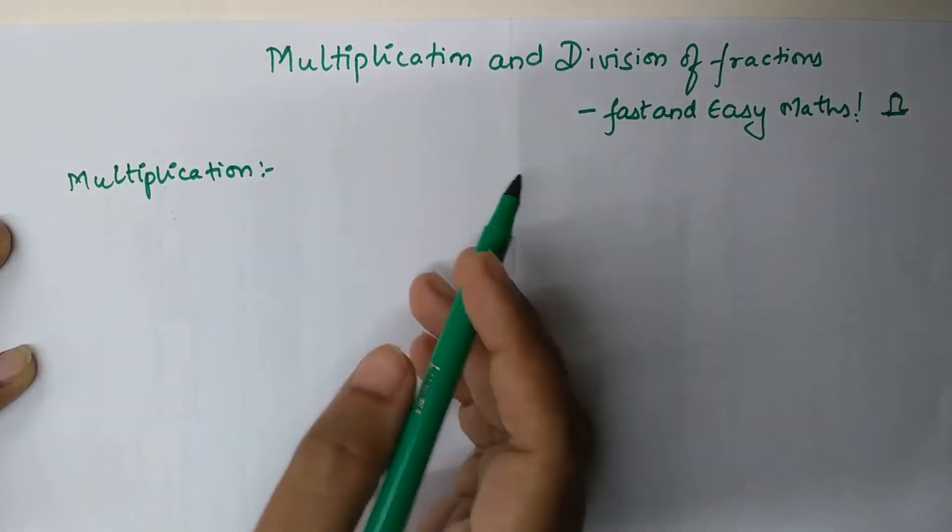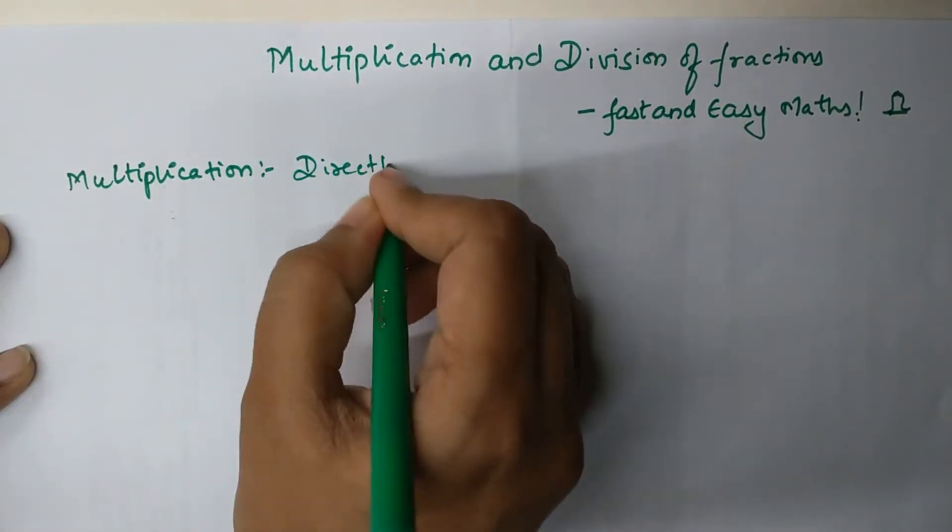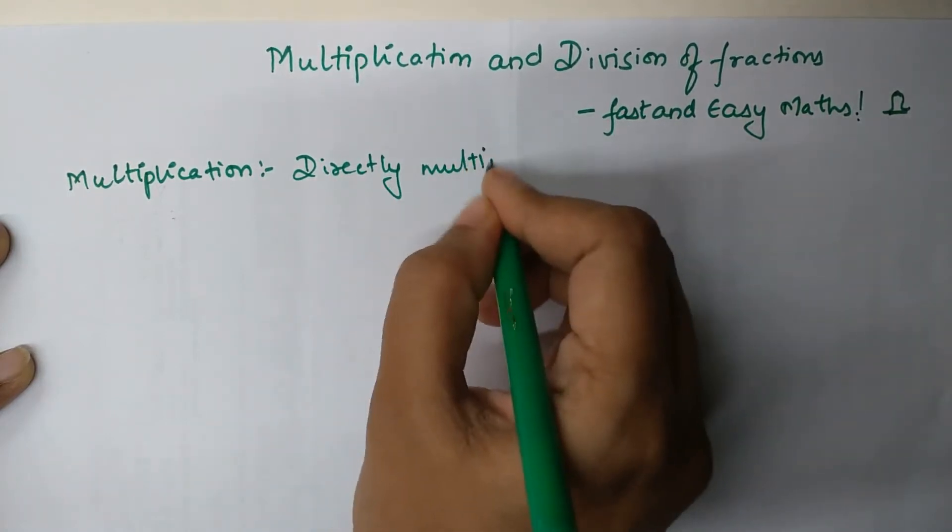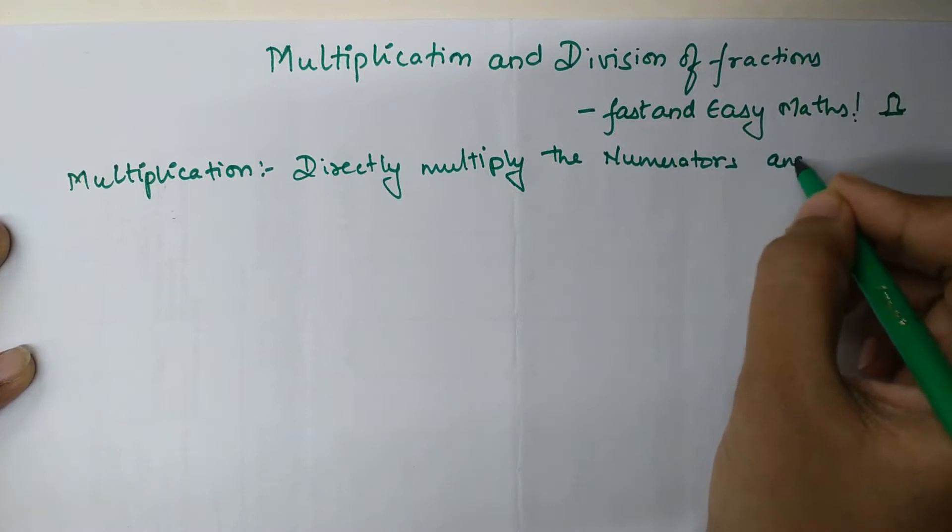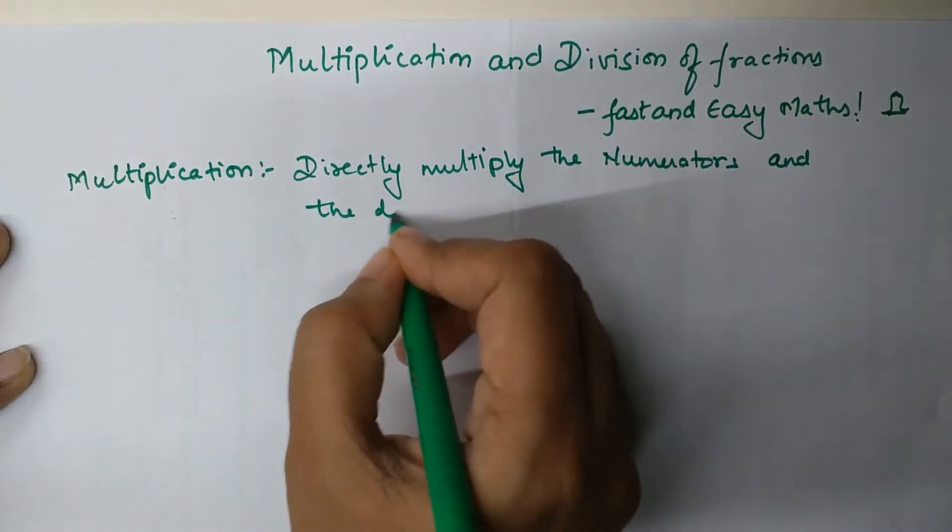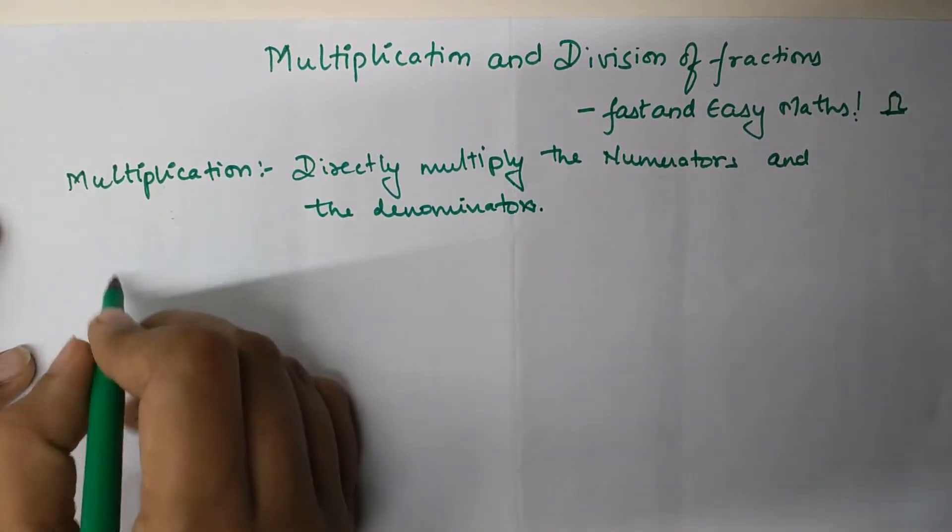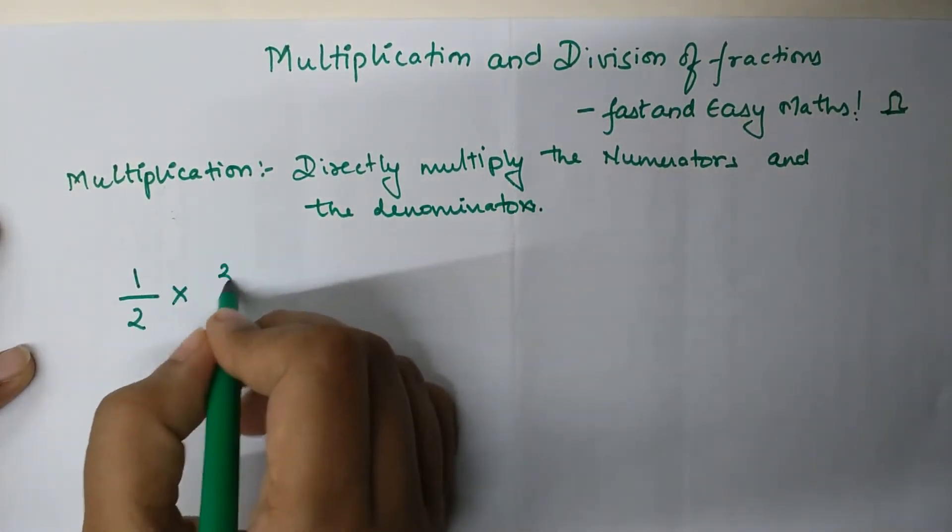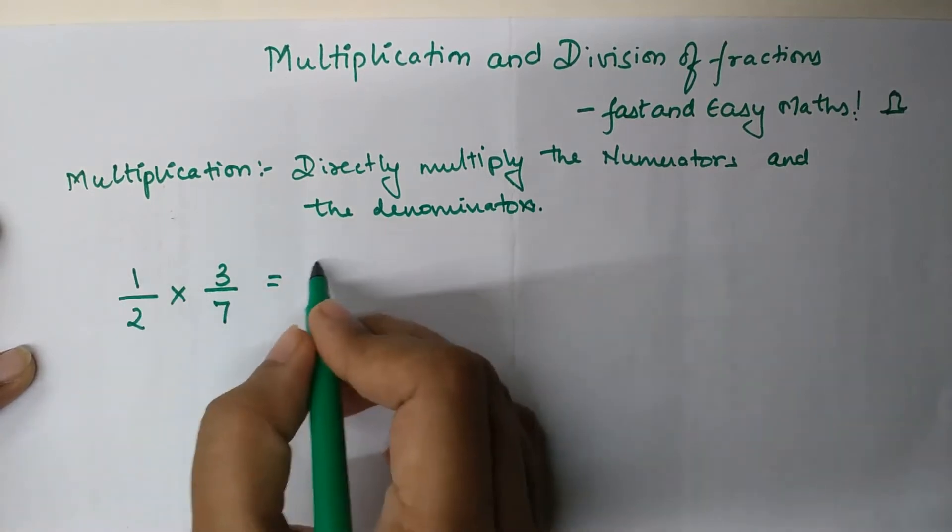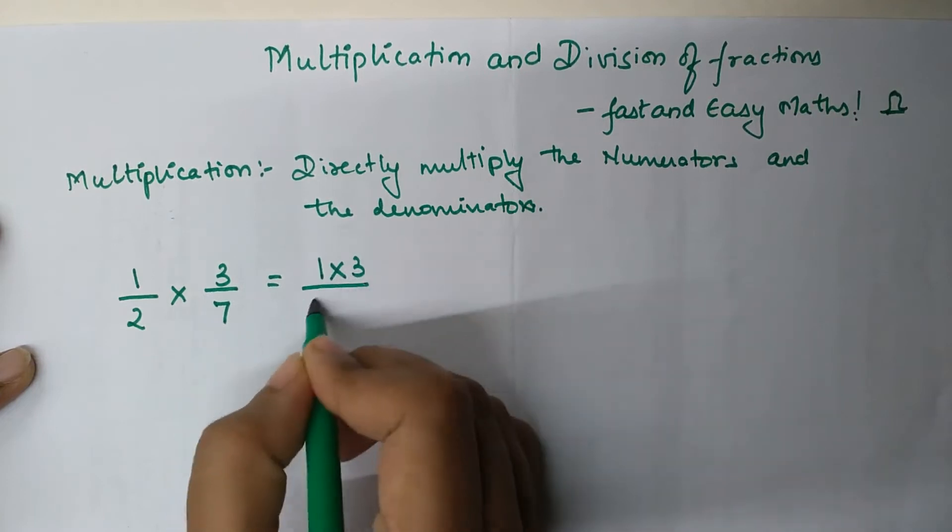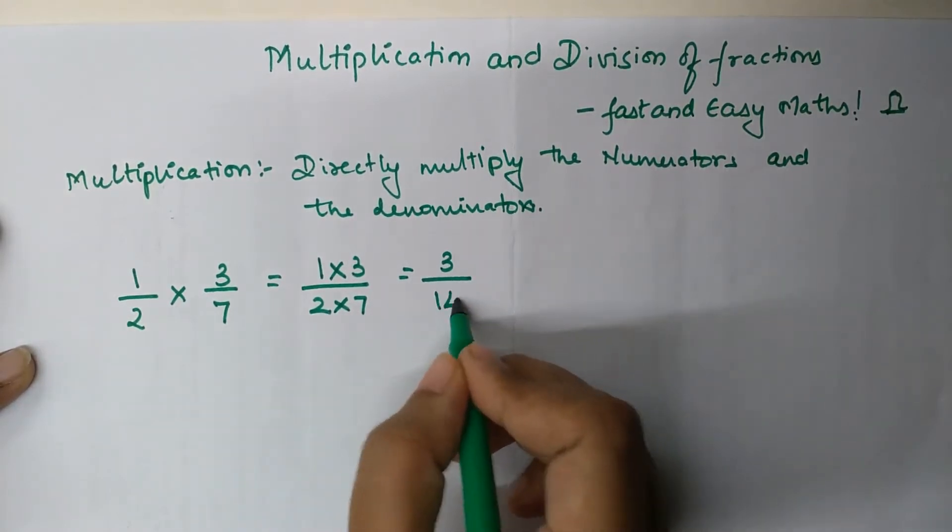Multiplication is the simplest because you can directly multiply the numerators and the denominators. For example, when you are multiplying 1/2 times 3/7, you multiply the numerators, so your final answer will have 1 times 3 upon 2 times 7, which is 3 upon 14.